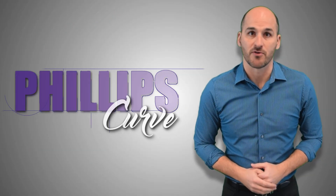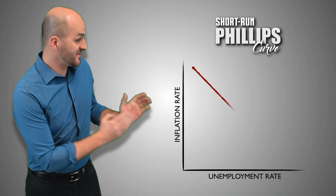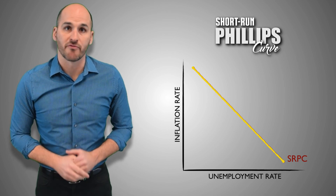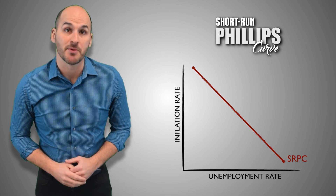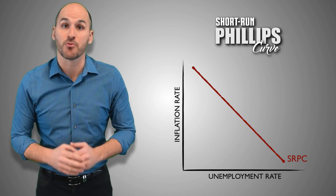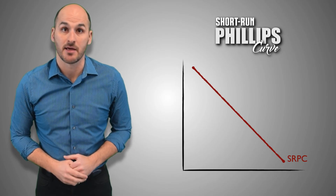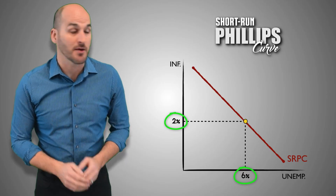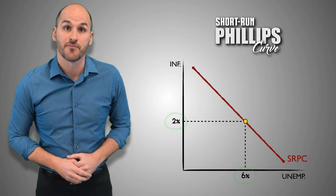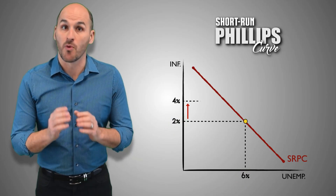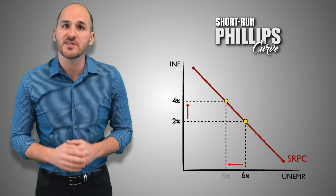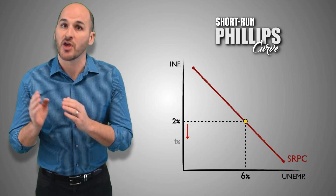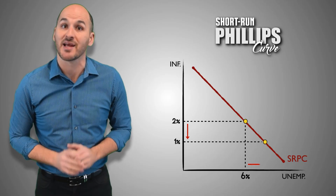Let's break down the Phillips curve. This is the short run Phillips curve. The downward slope of the curve visualizes the inverse relationship between the inflation rate and the unemployment rate in the aggregate economy. Any point on the curve represents the inflation rate and the unemployment rate that the economy is currently experiencing. Any movement along the curve, from one point to another, represents a change in economic conditions that have caused a change in both the unemployment rate and the inflation rate in the economy.